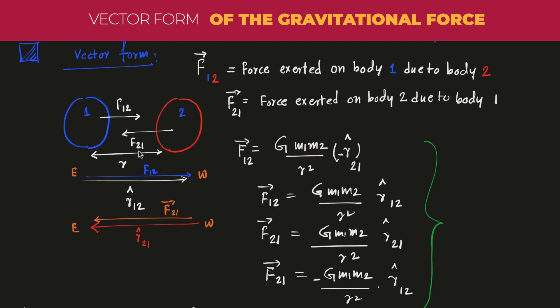Similarly, F21 will indicate the force exerted on body two due to body one, and they are acting opposite to each other. So if I want to find the value of F12, then I need to write it down in this way.